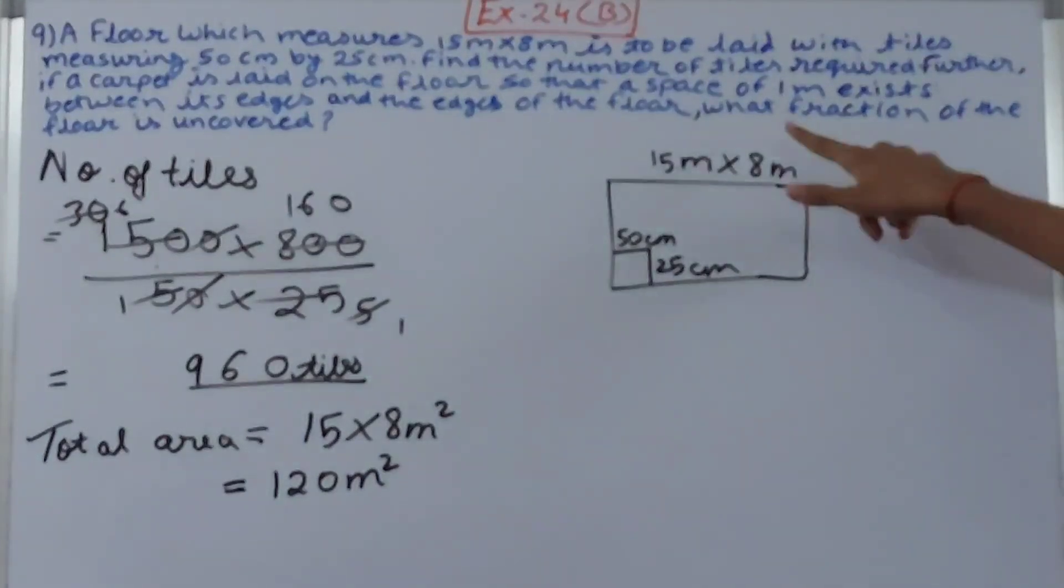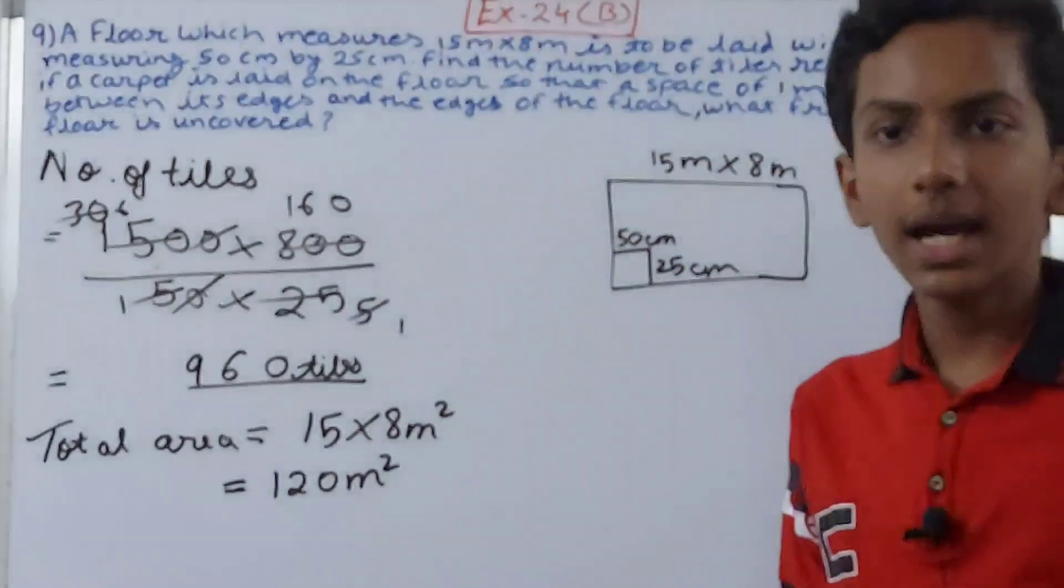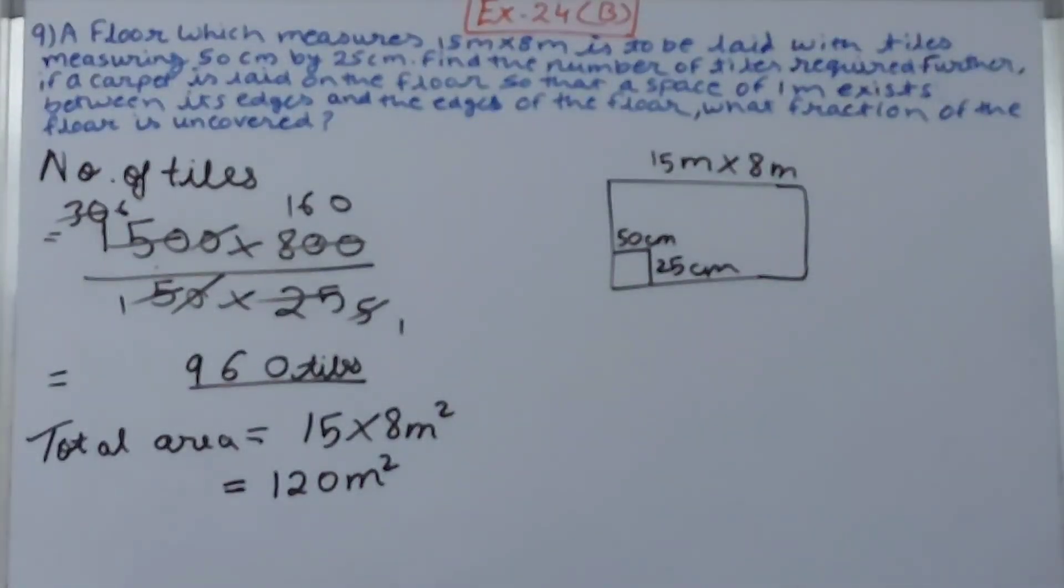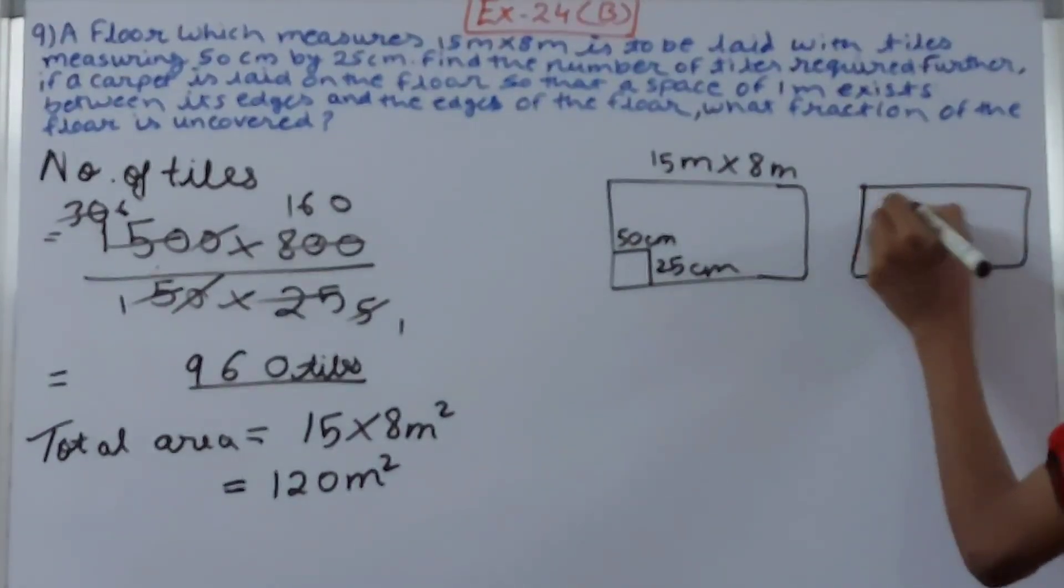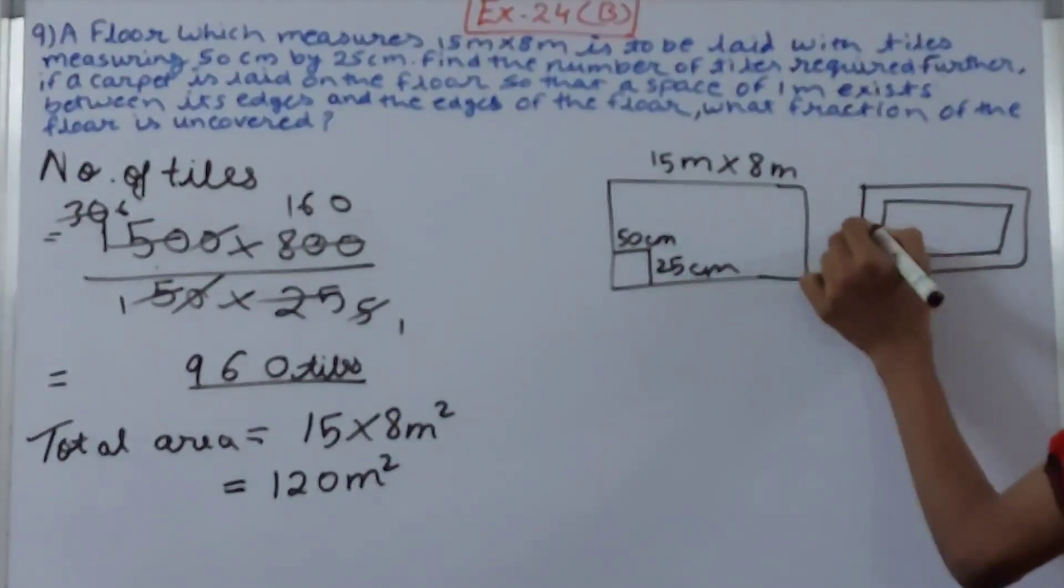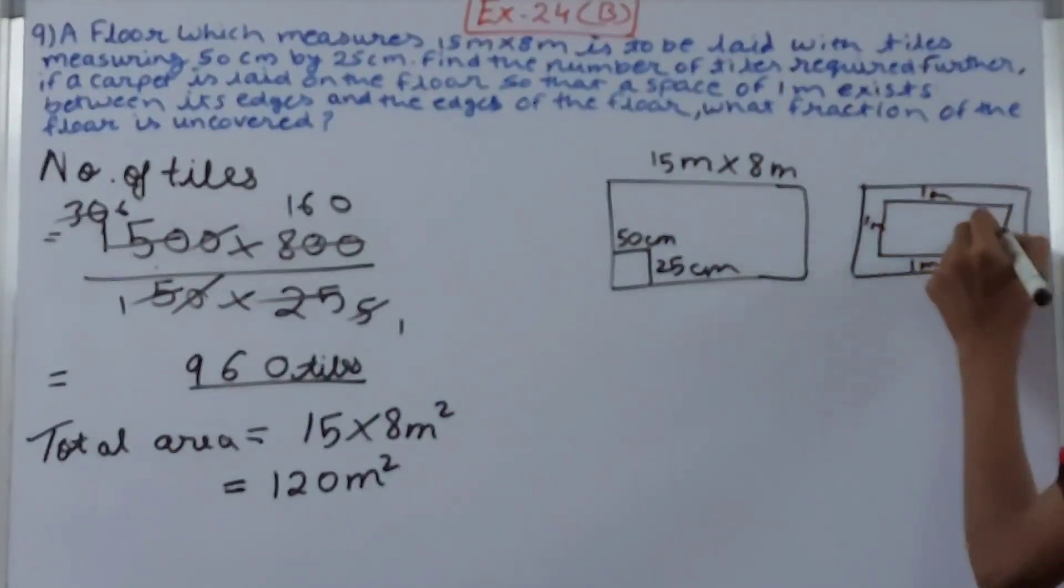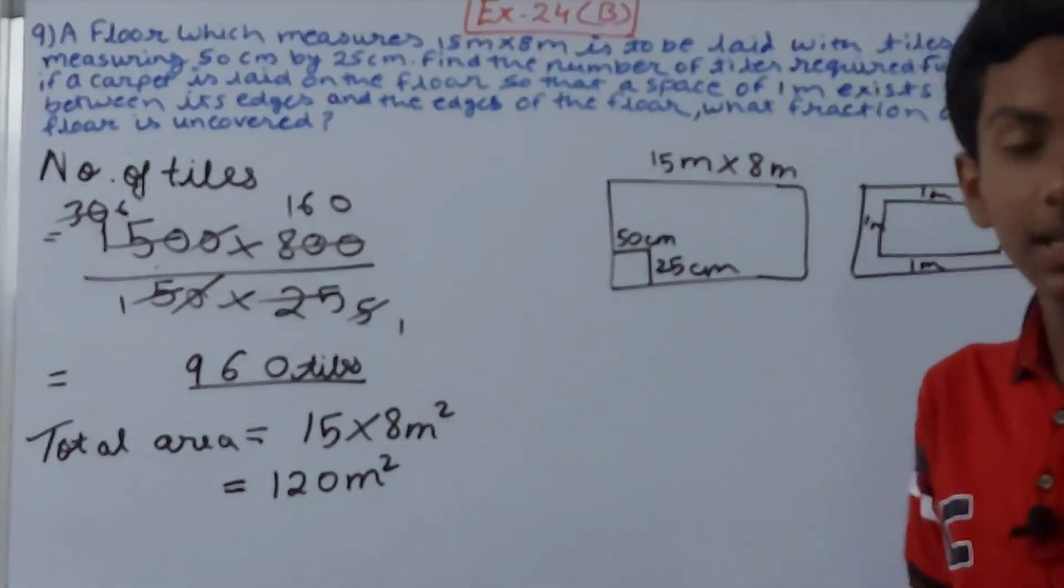Now see here that what fraction of the floor is uncovered, so we need to know the new area as well, that is area of the carpet. See here, suppose if this is the floor and on this floor we are laying a carpet. This much, now one meter here is the gap, one meter, and then one meter like this, on all the sides there's one meter.